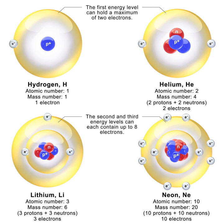A free neutron is unstable, decaying to a proton, electron, and antineutrino with a mean lifetime of just under 15 minutes. This radioactive decay, known as beta decay, is possible because the mass of the neutron is slightly greater than the proton. The free proton is stable. Neutrons or protons bound in a nucleus can be stable or unstable, however, depending on the nuclide.